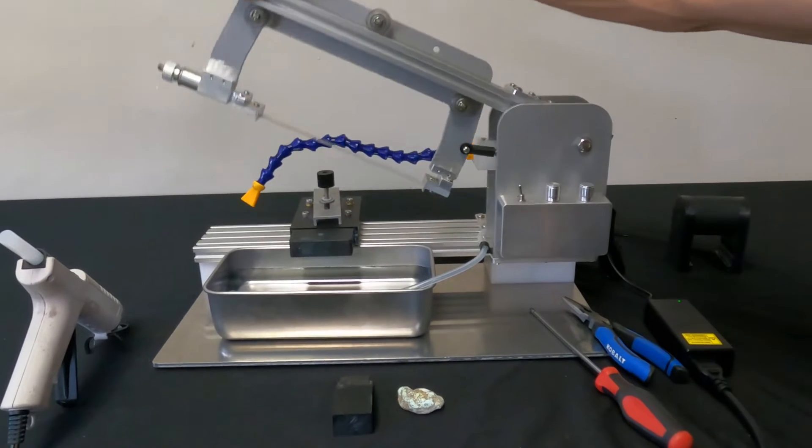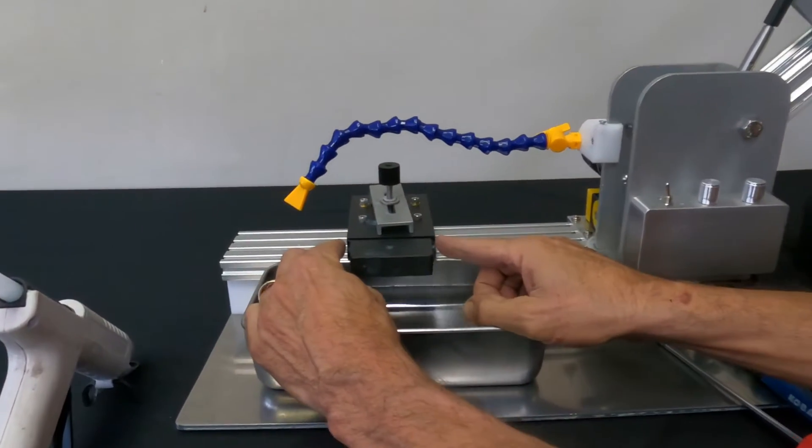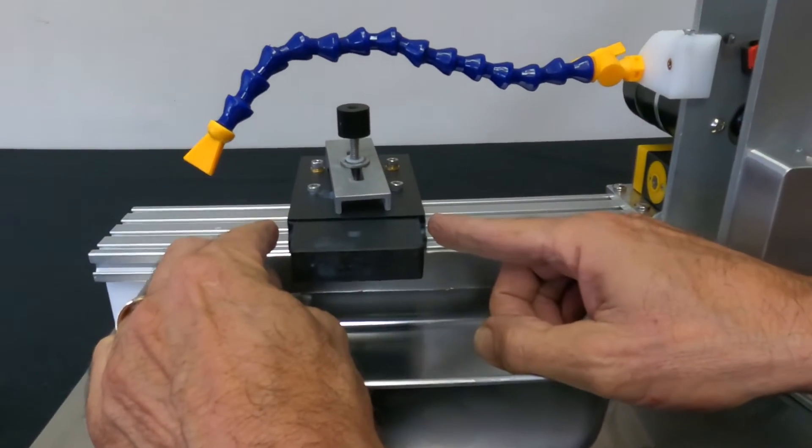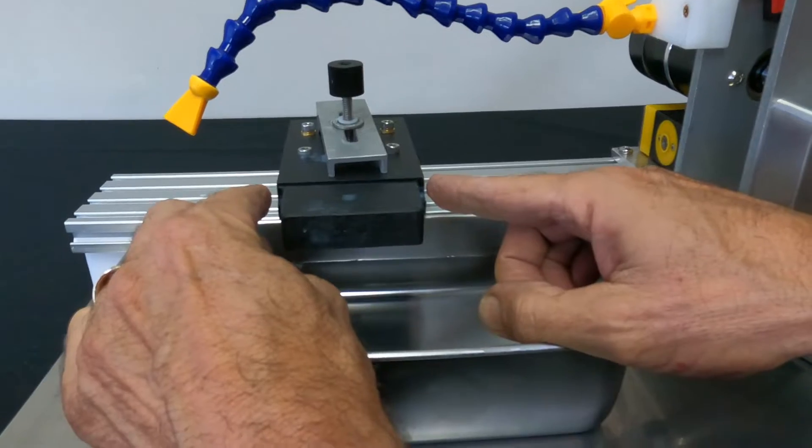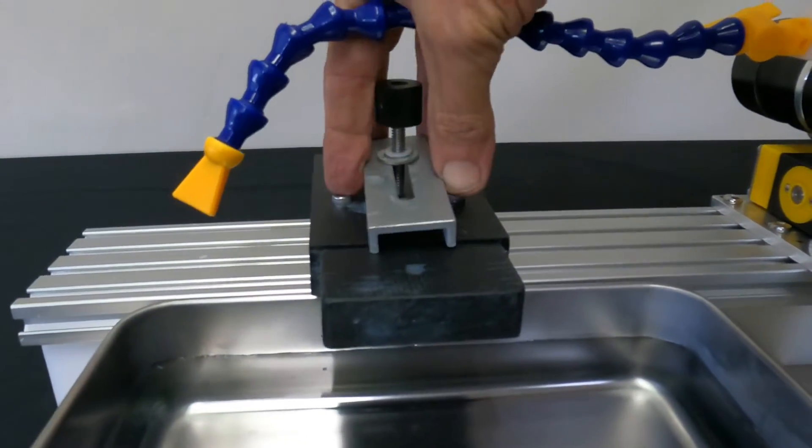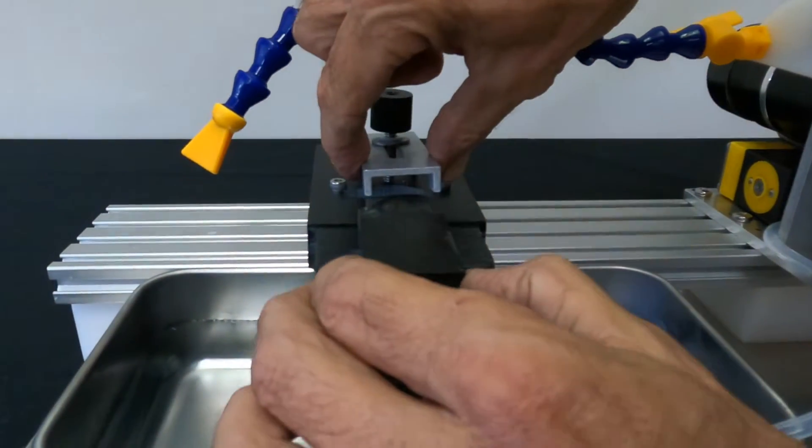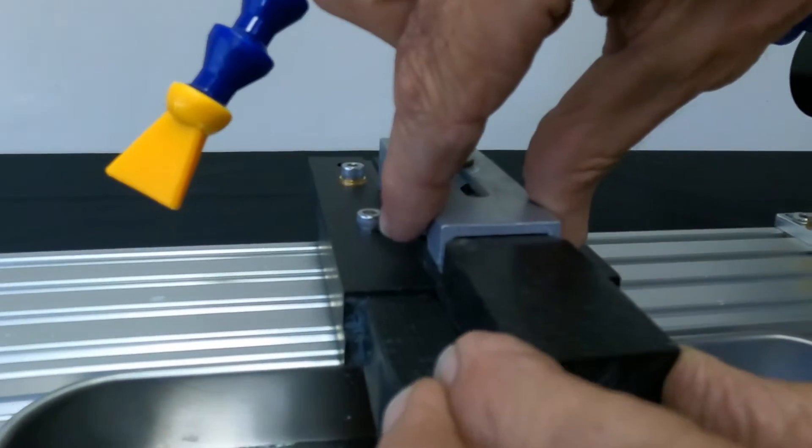The diamond wire saw is adjustable for rocks mounted on the vise up to about three and a half inches. The vise can actually just clamp a larger rock. For smaller rocks, we use a small rock adapter.